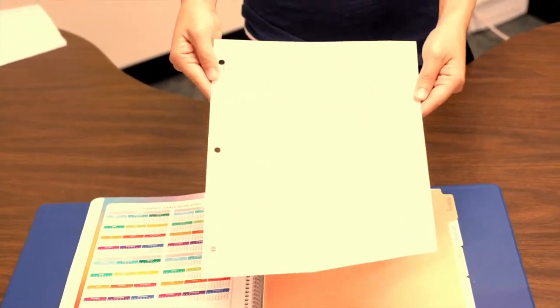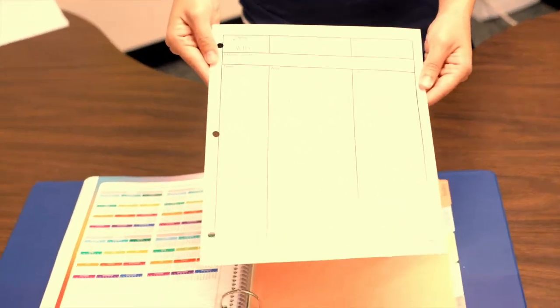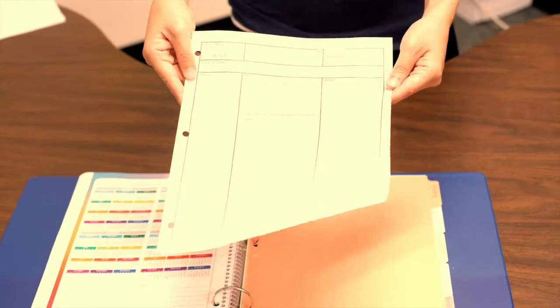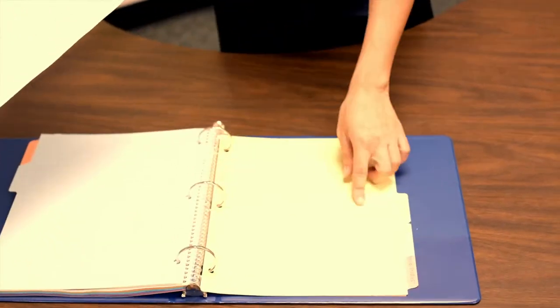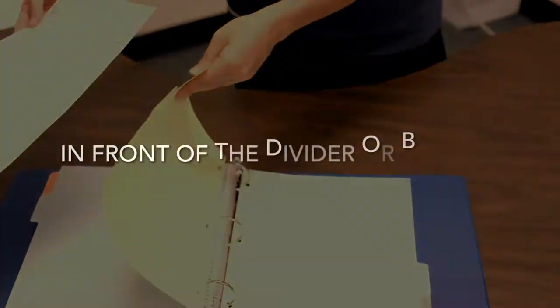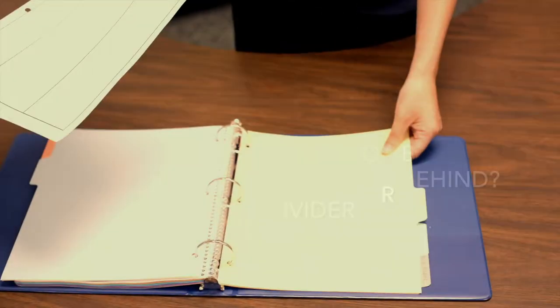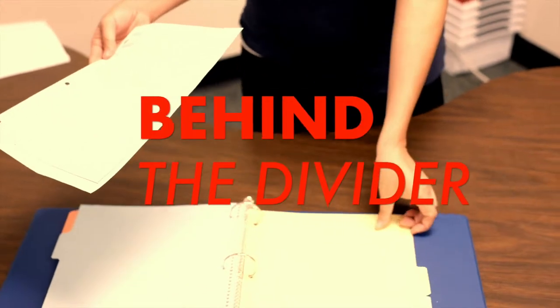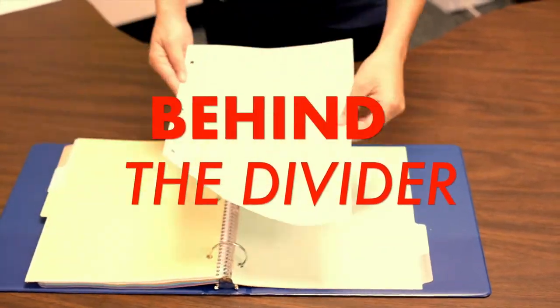For example, these are my Cornell notes for math. Where should I put these? In front of math, or behind math? Yes, that's right. It goes behind the math tab.